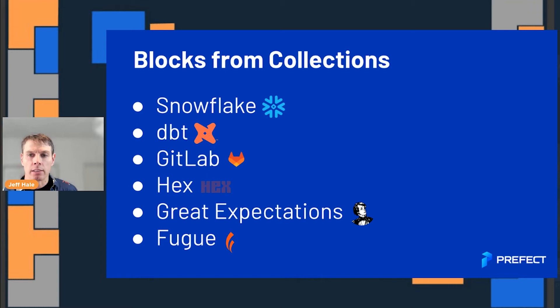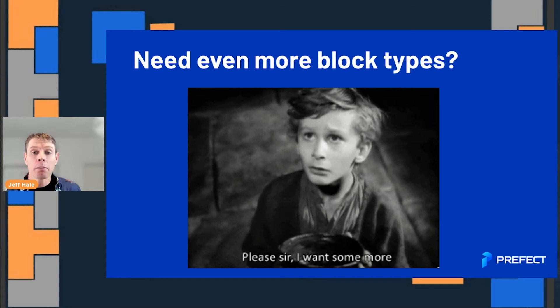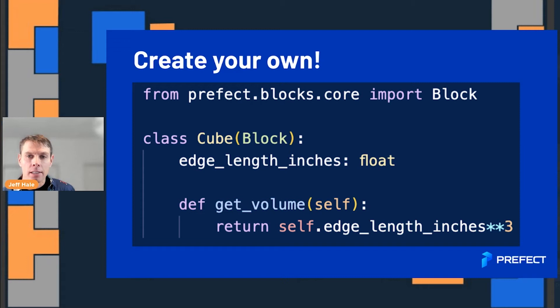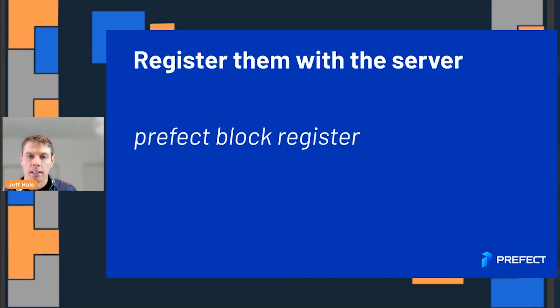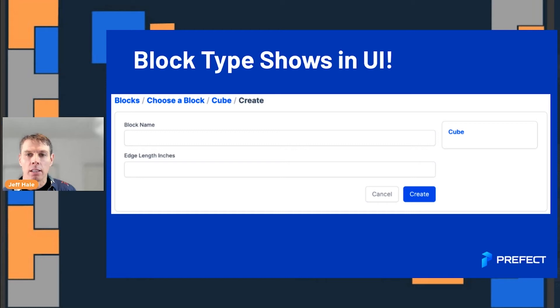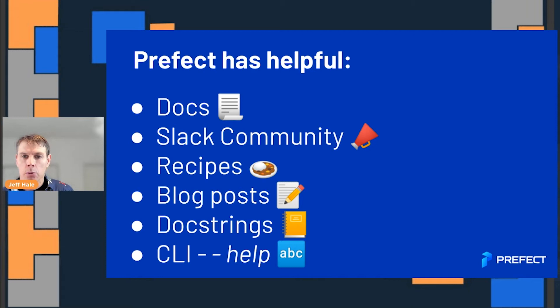There's a range of integration logos — Snowflake, DBT, GitLab, Hex, Great Expectations, and lots of other names you use on projects. If you want even more block types, you can go and create your own. Because these blocks are just classes, it's as easy as subclassing the core block class. Here's an example from our docs of how you could make a cube block. Then you do 'prefect block register' from the command line and register that information with the server. Go to your UI and you will see a form available right there — no HTML, CSS, or JavaScript needed.